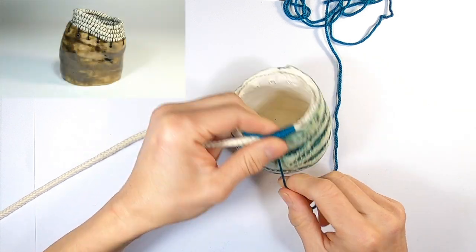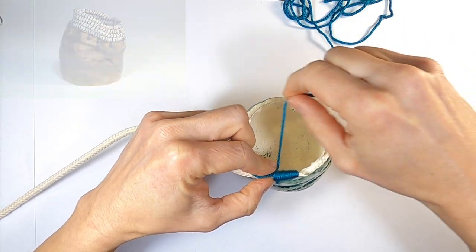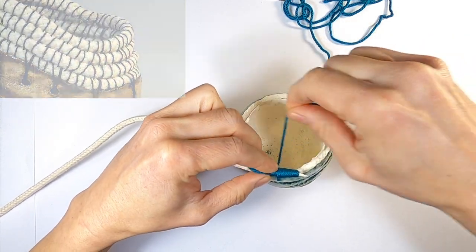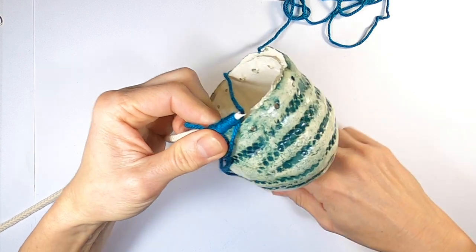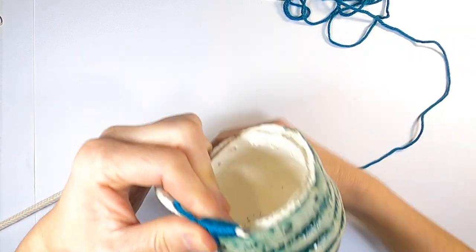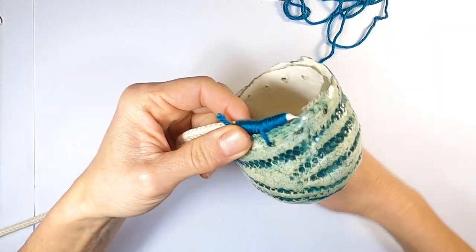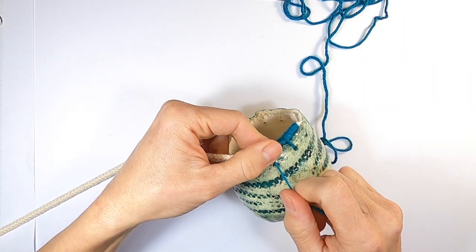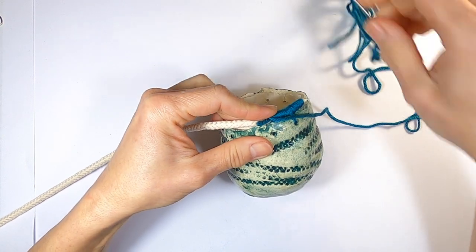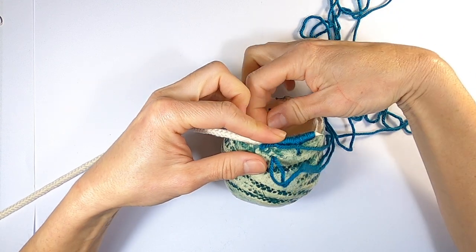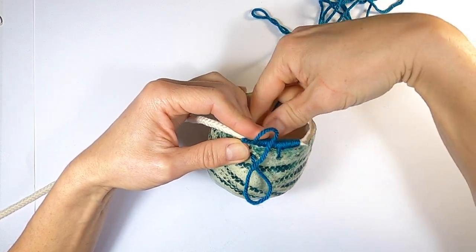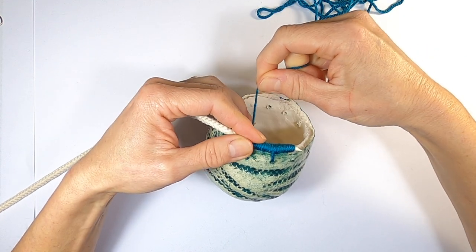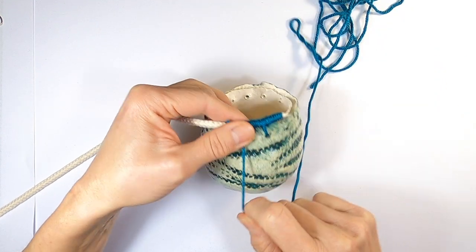This is another pot I made in which I left gaps in the thread so the white cord shows through. Keep winding the wool around until you reach the next hole underneath. Thread the needle through the hole. Pull it tight like before and keep winding to the next hole.